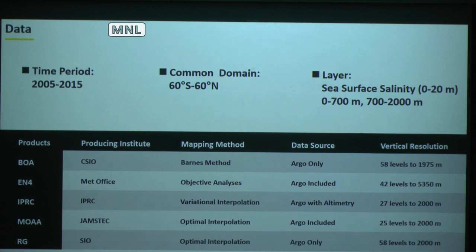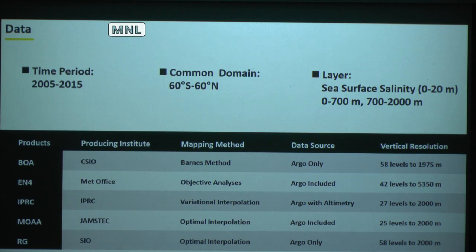For the domain, we pick 60 to 60. We look into three layers: the sea surface, which is the average of the upper 20 meters — it's very well mixed — another one is the upper 700 meters where the variation is strong, and 700 to 2000 meters where the variance is not as strong as the upper ocean.